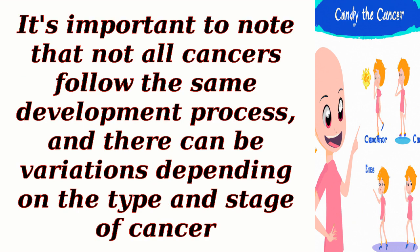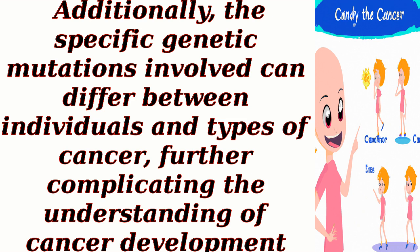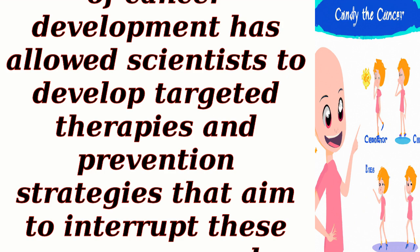It's important to note that not all cancers follow the same development process, and there can be variations depending on the type and stage of cancer. Additionally, the specific genetic mutations involved can differ between individuals and types of cancer, further complicating the understanding of cancer development. Understanding these detailed mechanisms has allowed scientists to develop targeted therapies and prevention strategies that aim to interrupt these processes and improve cancer treatment outcomes.